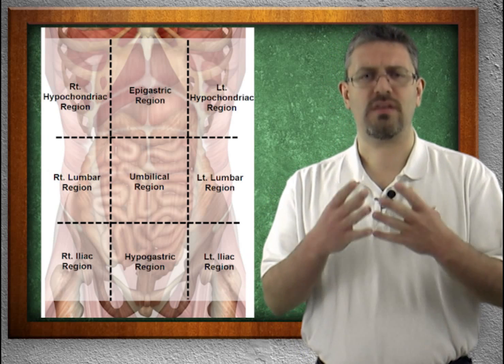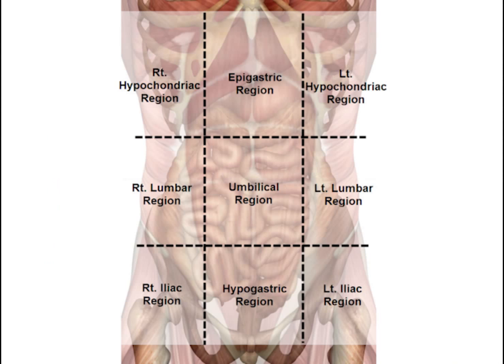Once again, the nine areas: we have the hypochondriac, the lumbar, the iliac — lefts and rights. Down the middle, we have the epigastric (epi = above or upon), the hypogastric (hypo = under or below), and the umbilical region.